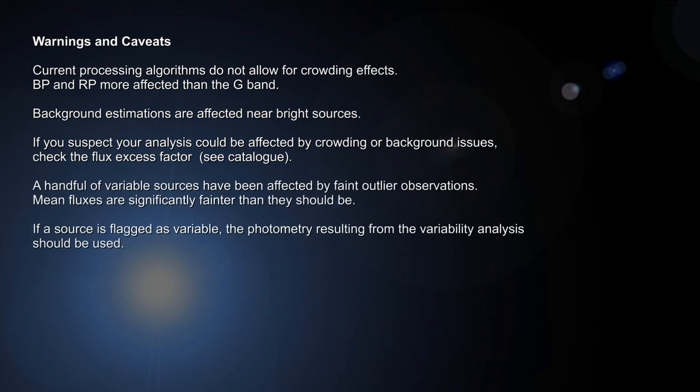Also, a handful of variable sources have been affected by faint outlier observations, and their mean fluxes are significantly fainter than they should be. If a source is flagged as variable, the photometry resulting from the variability analysis should be used rather than the one contained in the general source catalogue.